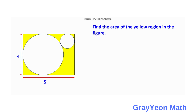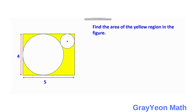First, we draw a line from the center of the smaller circle towards the center of the larger circle. Next, we draw a horizontal line from the side of the rectangle to the center of this circle, and another horizontal line from the center of the circle to the right. We also draw a vertical line from the center of the smaller circle, and we can form a right triangle.